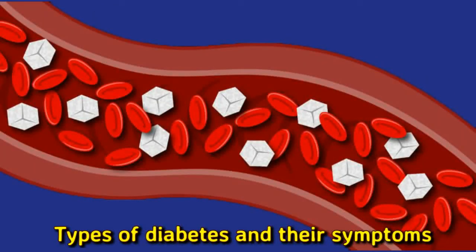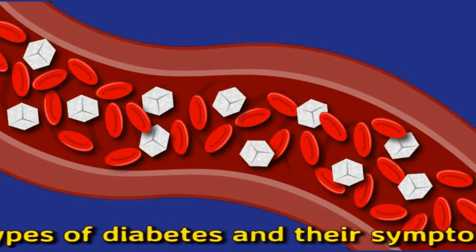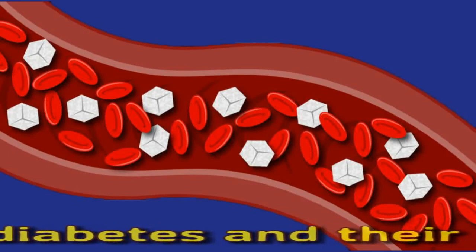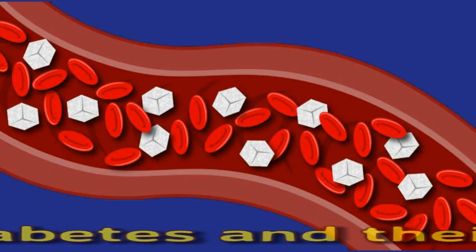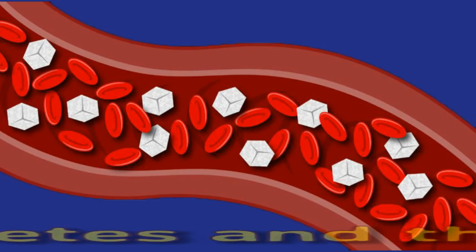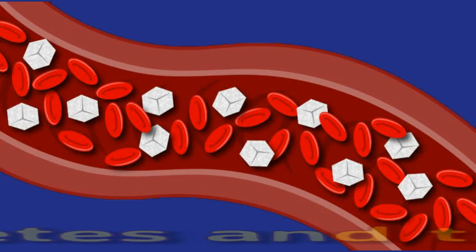Current guidelines recommend diabetes screening for everyone ages 45 years or above, and anyone younger who has risk factors for the disease. Early diagnosis and treatment can help slow or even reverse the disease, reducing the risk of complications. Gestational diabetes occurs only in pregnancy, though around 50% of females with this form go on to develop type 2 diabetes. If a routine screening shows high blood sugar levels during pregnancy, a doctor will monitor the person's condition until a few weeks after delivery. In most cases, blood sugar levels return to normal immediately after delivery.